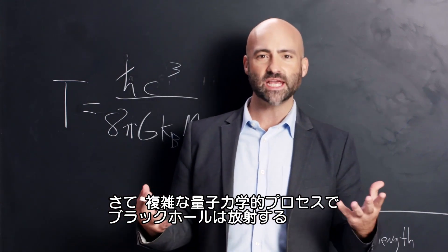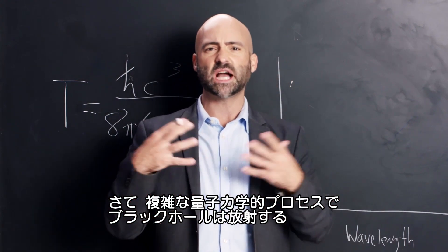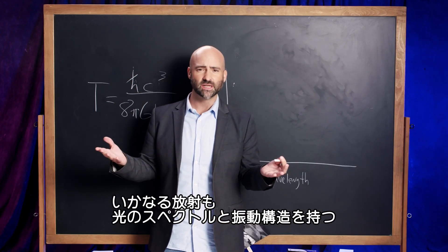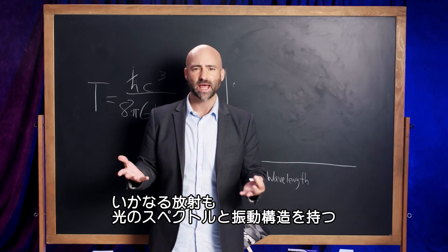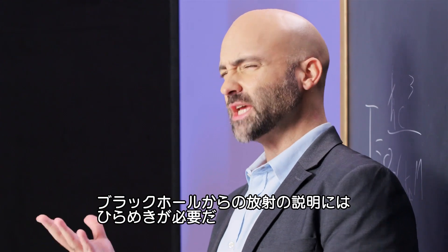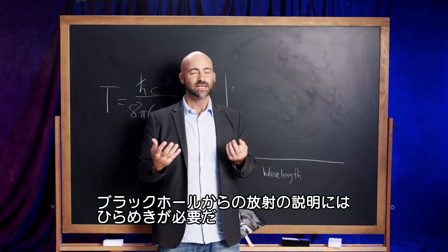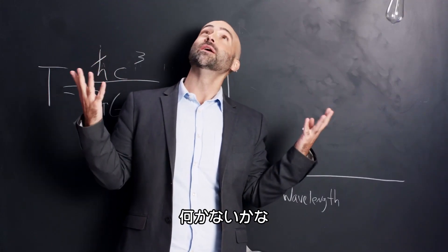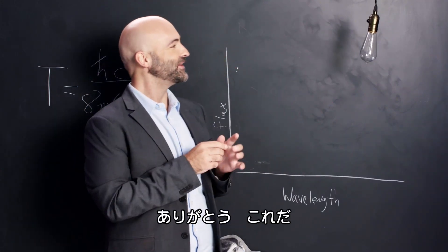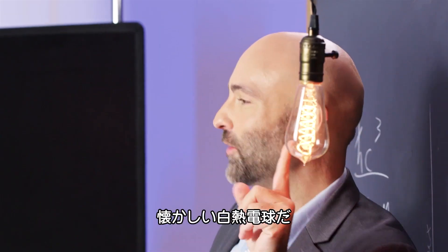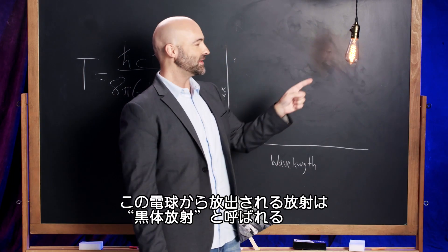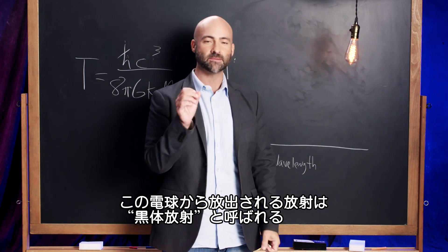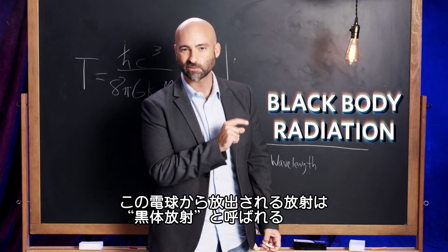Now black holes emit radiation through this crazy complex quantum mechanical process. Any kind of radiation has a spectrum, has a structure. To describe the radiation emitted by a black hole I need some inspiration — a light bulb moment, if you will. This is an old school incandescent light bulb, and the kind of radiation — the spectrum of radiation emitted by this light bulb — is something we call black body radiation.